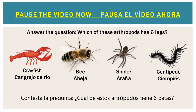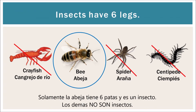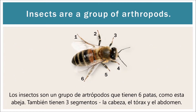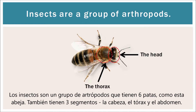Now pause the video and answer this question: which of these arthropods has six legs? Of these arthropods, the bee is the only one that has six legs, and that makes it an insect. The other ones are not insects. Insects are a group of arthropods that have six legs like this bee. They also have three body segments, which are the head, the thorax, and the abdomen.